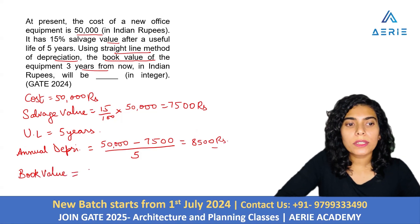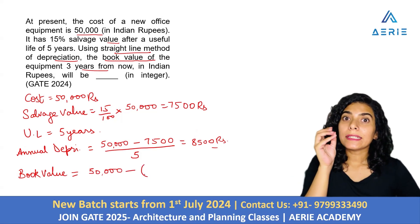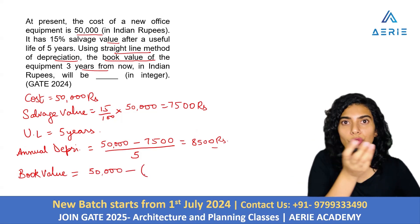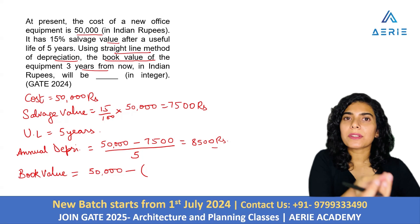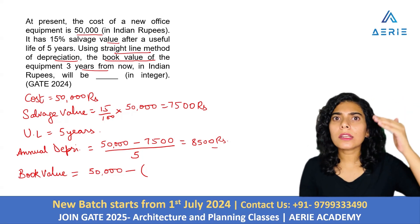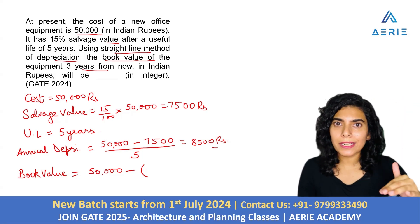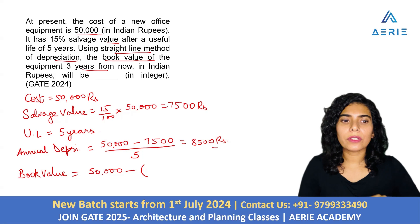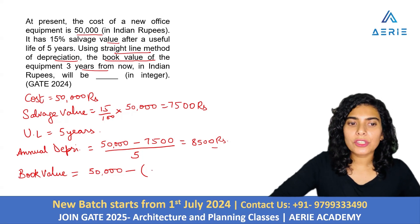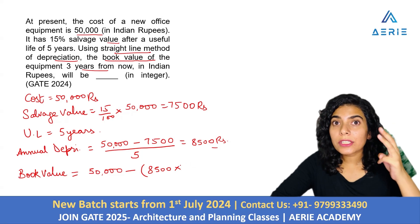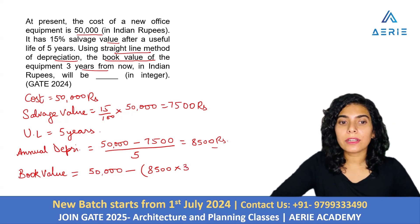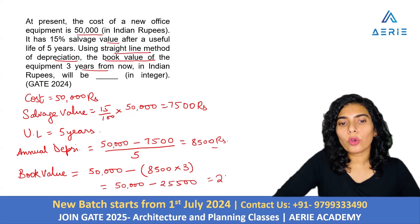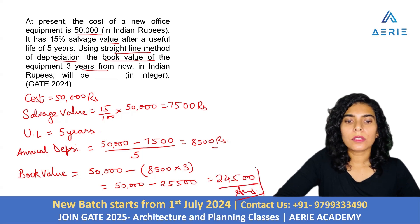To calculate book value, the formula is: total cost minus depreciation over 3 years. The total cost is 50,000. Annual depreciation is 8,500, so depreciation over 3 years is 8,500 multiplied by 3, which equals 24,500. So the book value is 50,000 minus 24,500, giving us 25,500. That is the answer to this question.